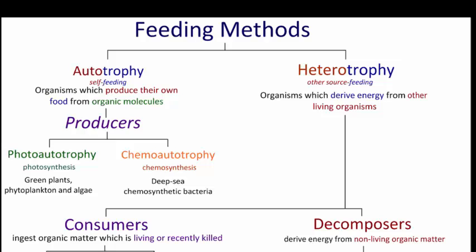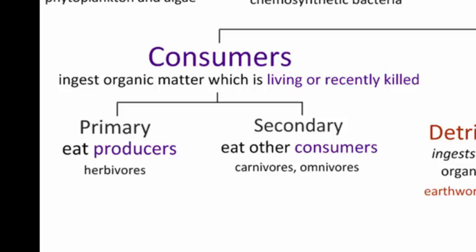On the other side, we have heterotrophs. These are organisms which get their energy from other living things — they cannot make their own food. You have two main branches of heterotrophs: consumers and decomposers. Consumers are going to ingest organic material which is living or recently killed. This would be herbivores, carnivores, or omnivores.